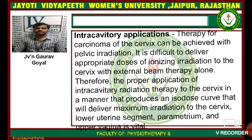It is difficult to deliver an approximate dose of ionizing radiation to the cervix with external beam therapy alone. Therefore, the proper application of intracavitary radiation therapy to the cervix in a manner that produces an isodose curve that will deliver maximum irradiation to the cervix, lower uterine segment, parametrium, and upper vagina is vital.